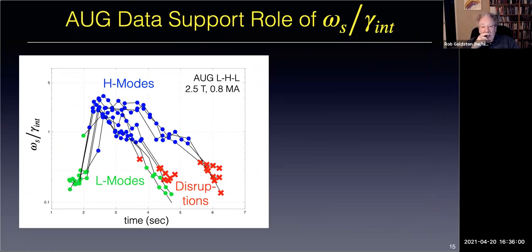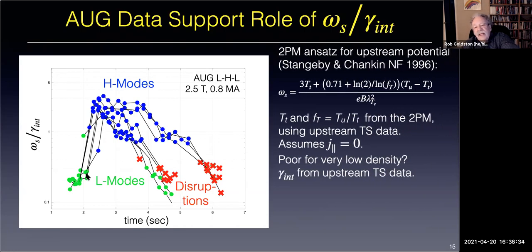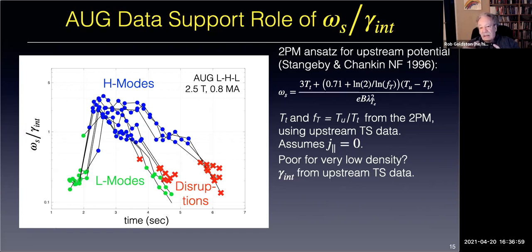Here are AUG time-dependent data from lower and higher power shots where they varied density in time—L-modes here, and some shots that drop into disruption at high density. Using a two-point model for the upstream potential due to Stangby and Schenken (Nuclear Fusion '96), the shearing rate comes from his potential times lambda-T-e squared. The potential depends on upstream temperature minus target temperature, plus a term with the target temperature. The density profile is assumed proportional to the temperature profile to some power—doesn't make a huge difference—giving the target temperature from the two-point model using upstream Thomson scattering.